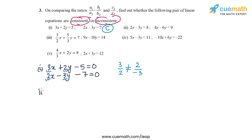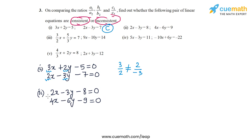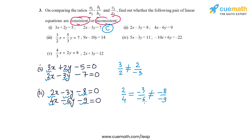For the second part, the two equations are 2x − 3y = 8 (or 2x − 3y − 8 = 0) and 4x − 6y − 9 = 0. A1/A2 equals 2/4 and B1/B2 equals (−3)/(−6). Both ratios equal 1/2 in lowest form, so they are equal. Then C1/C2 equals (−8)/(−9), which is clearly not equal to 1/2. So A1/A2 = B1/B2 ≠ C1/C2, meaning the lines will be parallel — this pair is inconsistent.